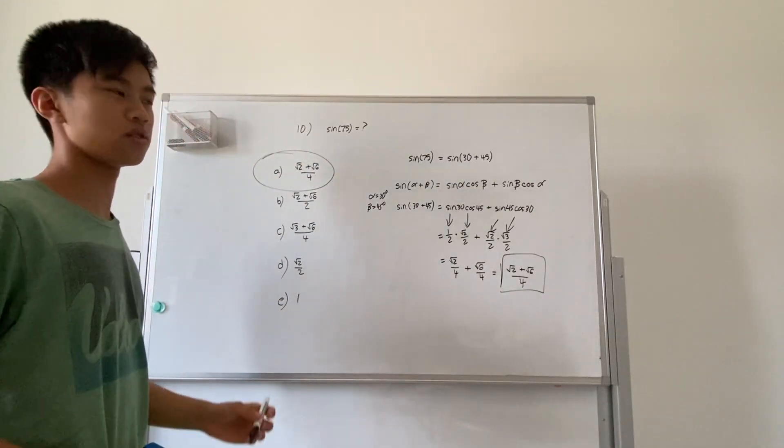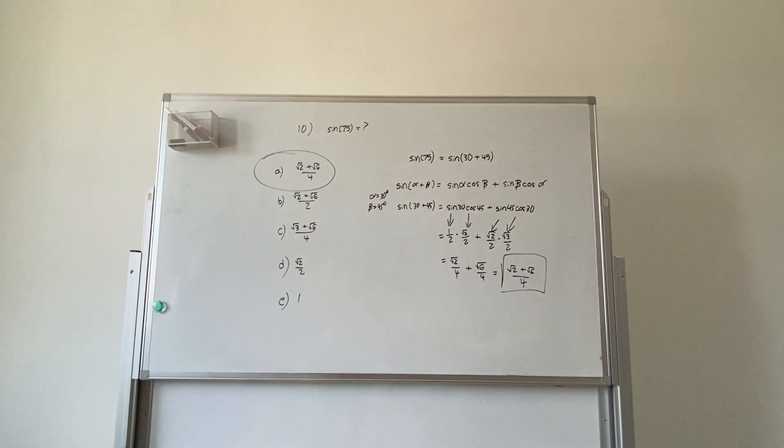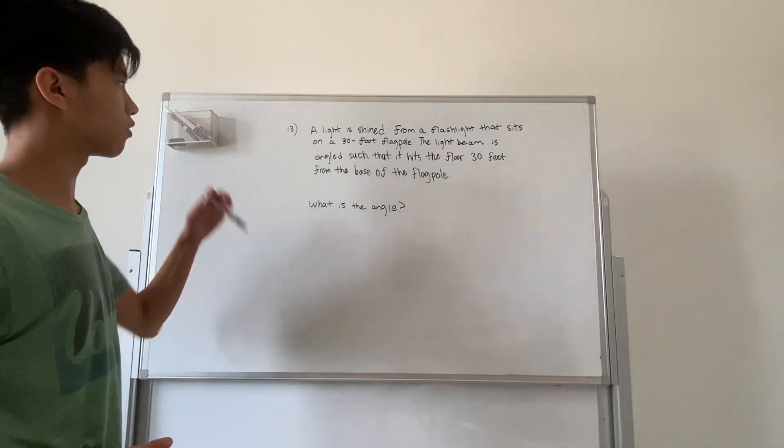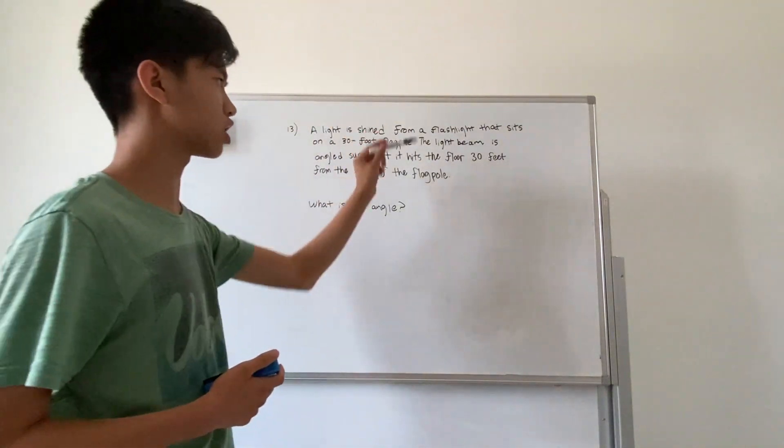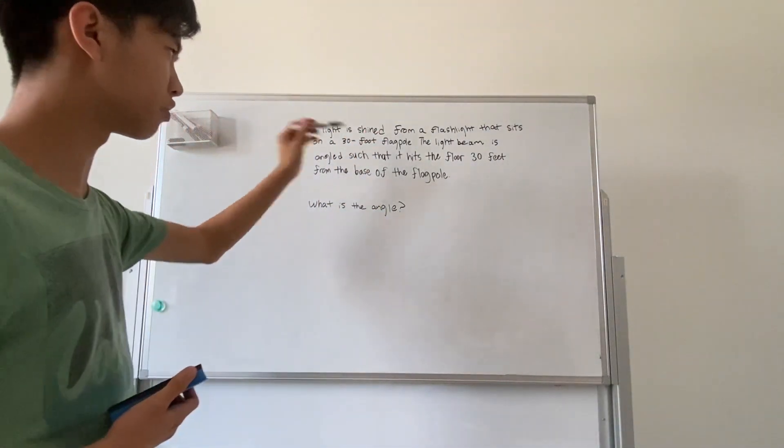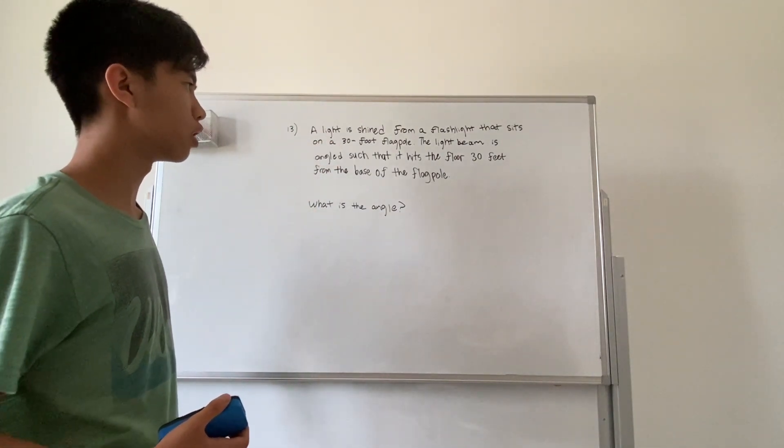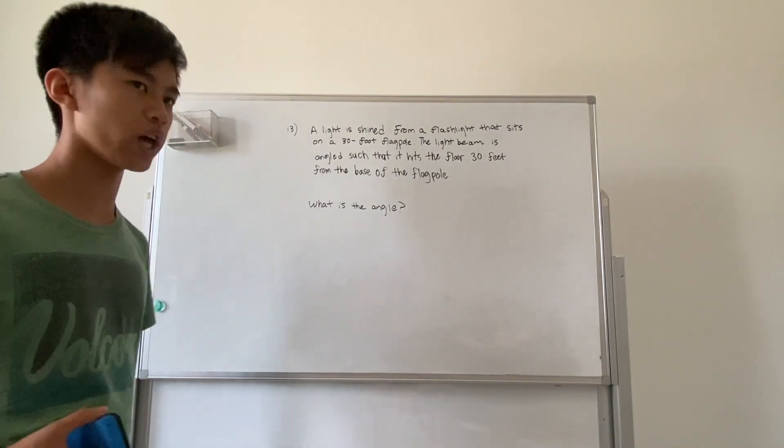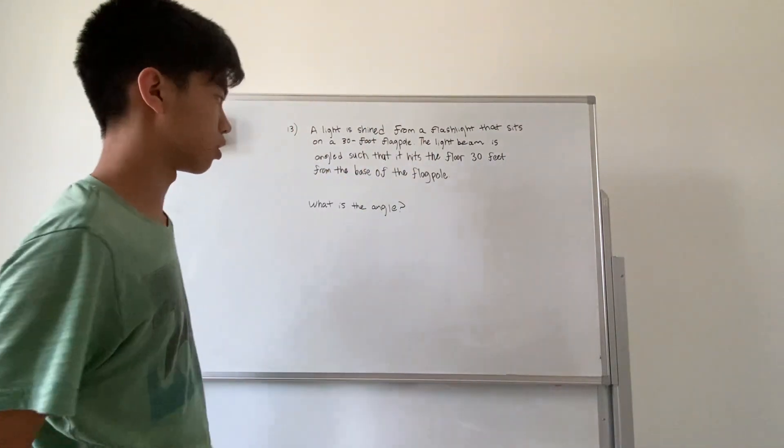All right, we now have number 13. We have a light that is shined from a flashlight that sits on top of a 30 foot flagpole. The light beam is angled down such that it hits the floor 30 feet from the base of the flagpole. The question is, what is the angle that the light beam is angled down?